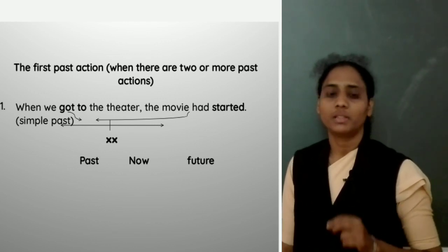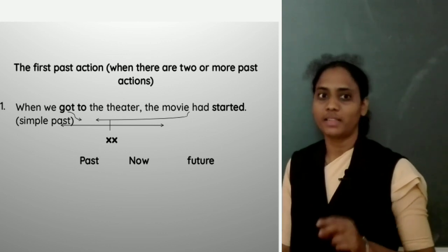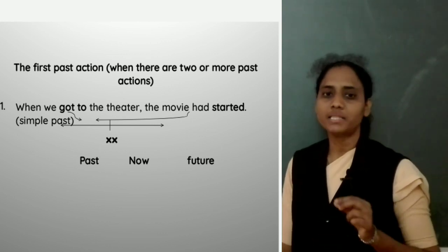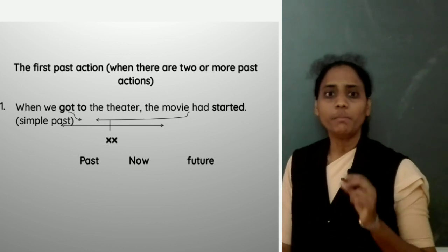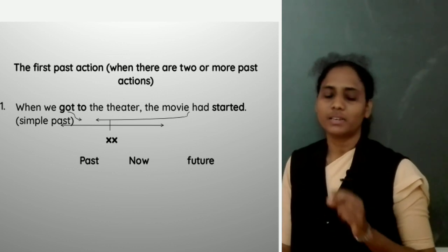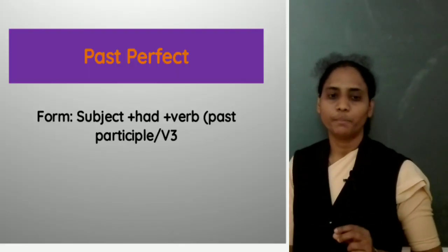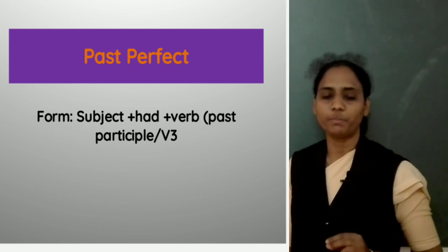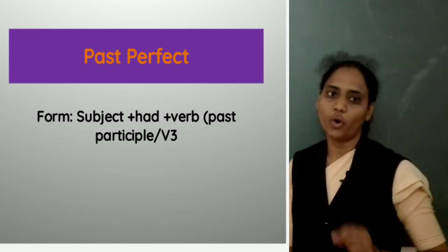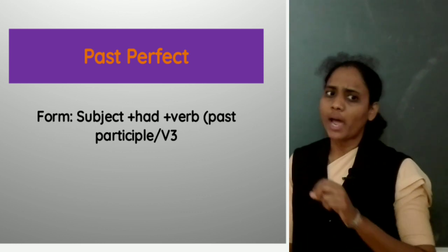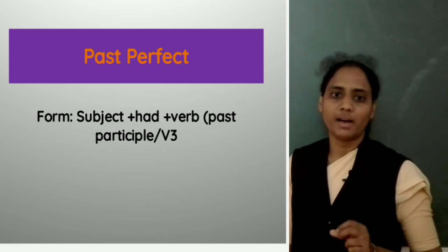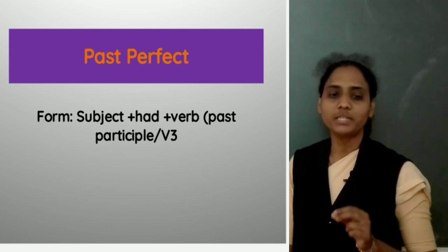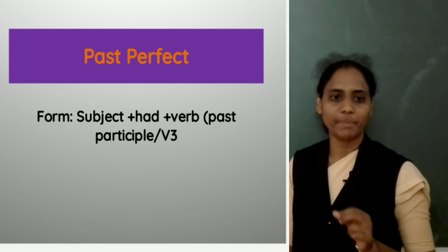But what about this: When we got to the theatre, the movie had already started — meaning the movie started before we got to the theatre. So the movie started first, then we arrived. This is the past perfect tense. We make it with a subject plus 'had' plus a verb in the past participle or V3 form. When we have two actions in the past, we use the past perfect to clearly show which action happened first.